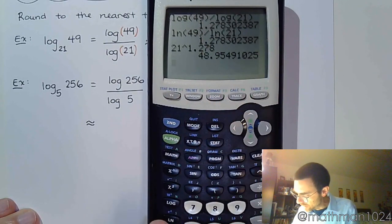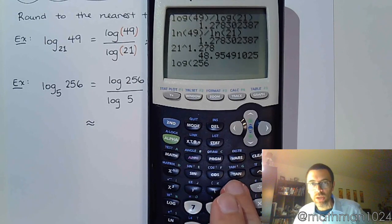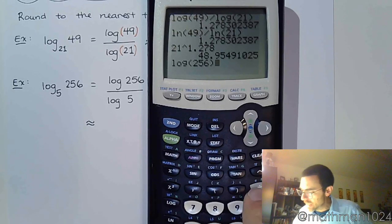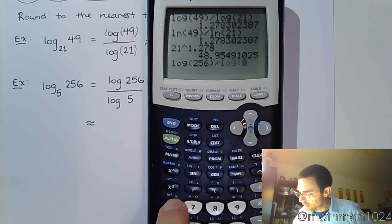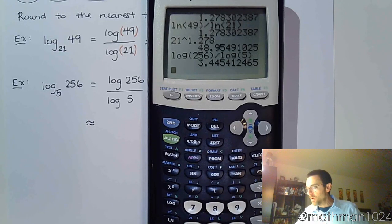Alright, so let's see. We've got log of 256, close parentheses. I cannot stress that enough to pay attention to your parentheses. Divided by log of 5. So we get 3.445.